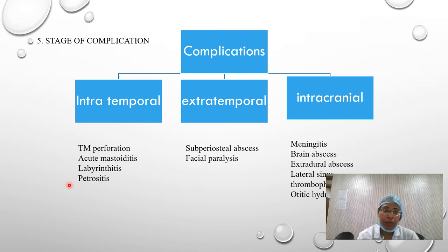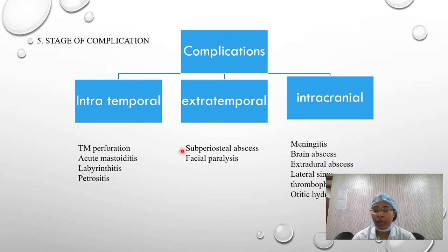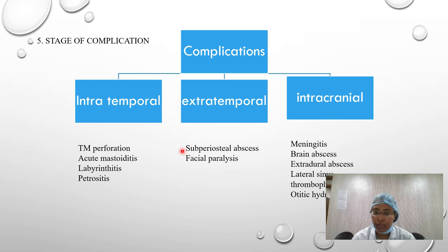Petrositis involves spread of infection to the petrous part of the temporal bone, similar in route to labyrinthitis, causing pain in the petrous region. Extratemporal complications include subperiosteal abscess, the second most common complication after tympanic membrane perforation. If acute mastoiditis is not treated promptly, it may become coalescent mastoiditis — presenting after several weeks with pus accumulation in the mastoid, breakdown of septa, and osteitis of the mastoid bone.